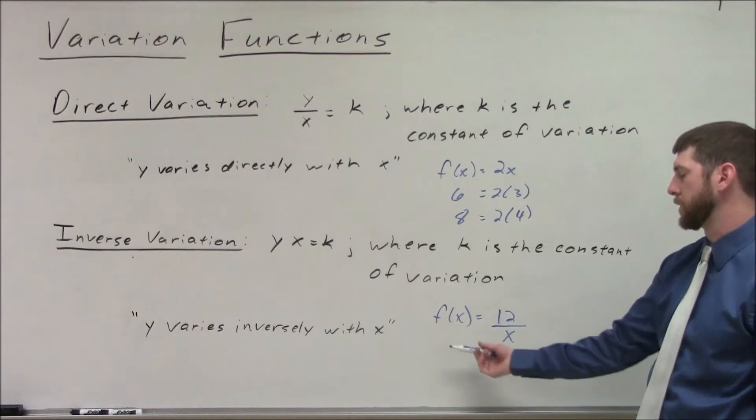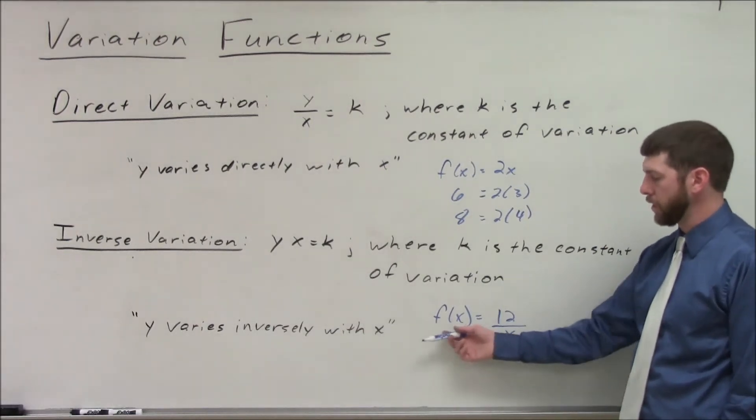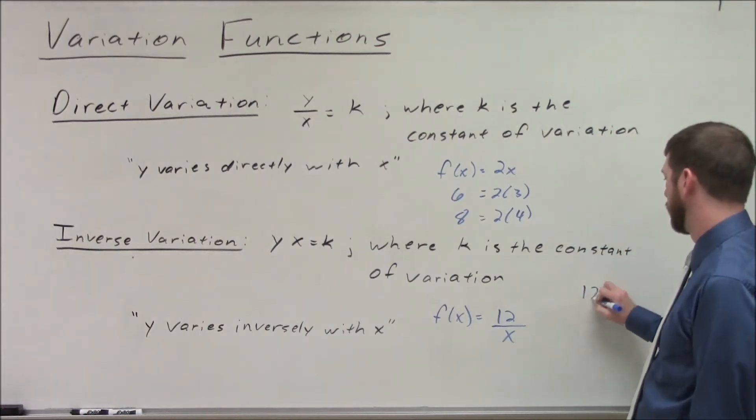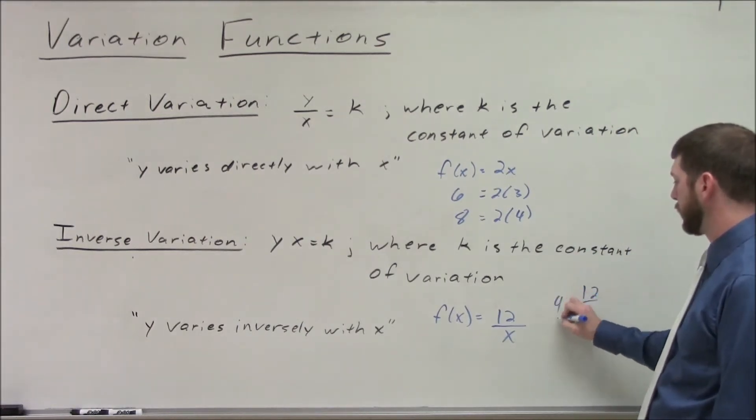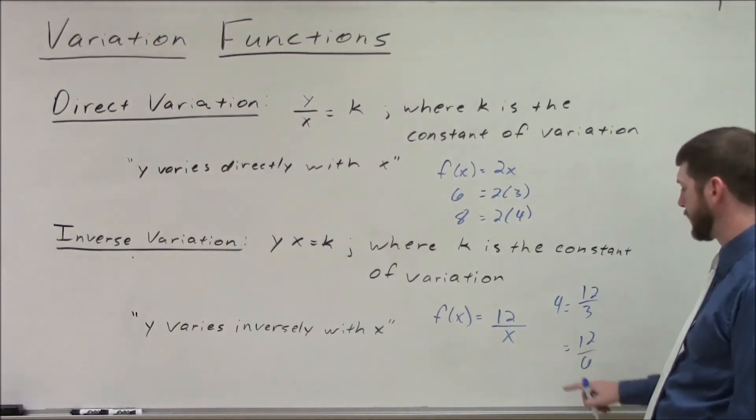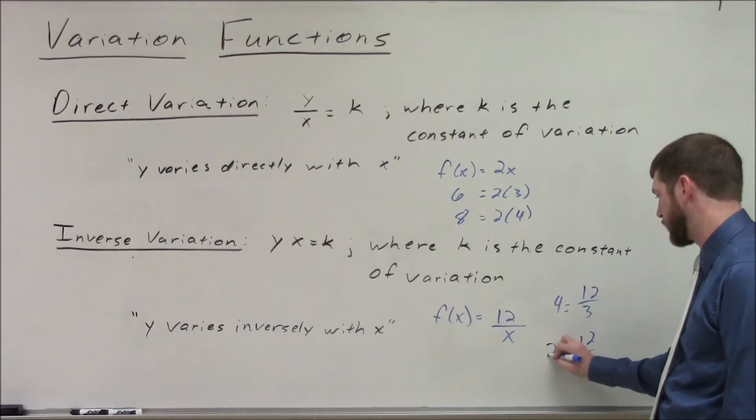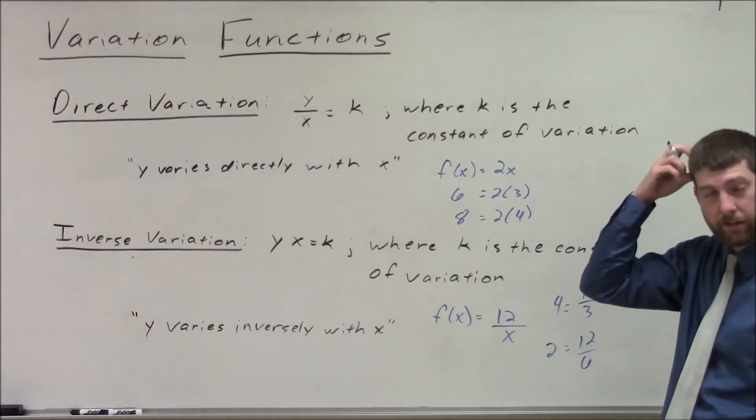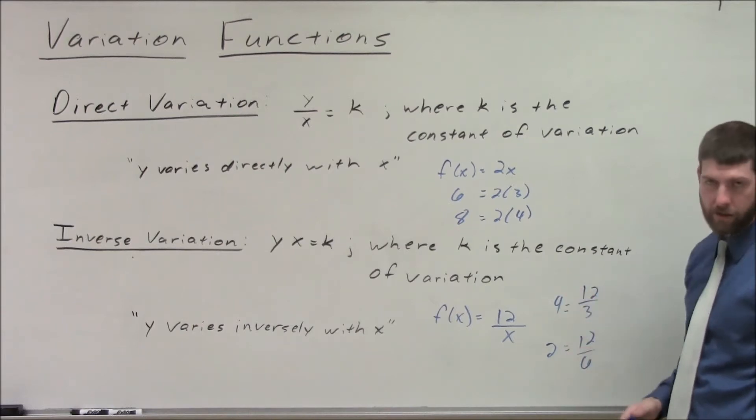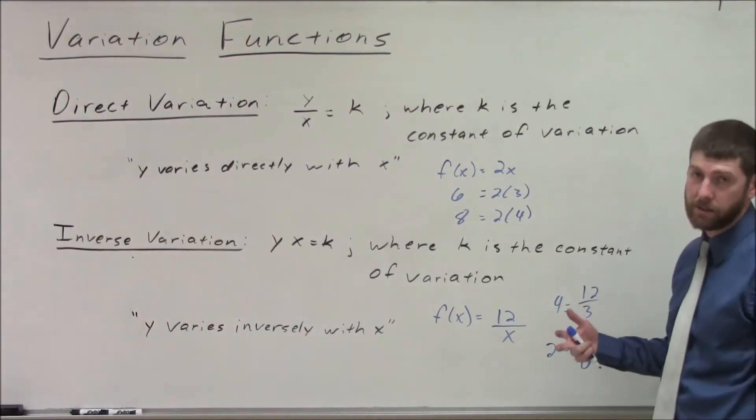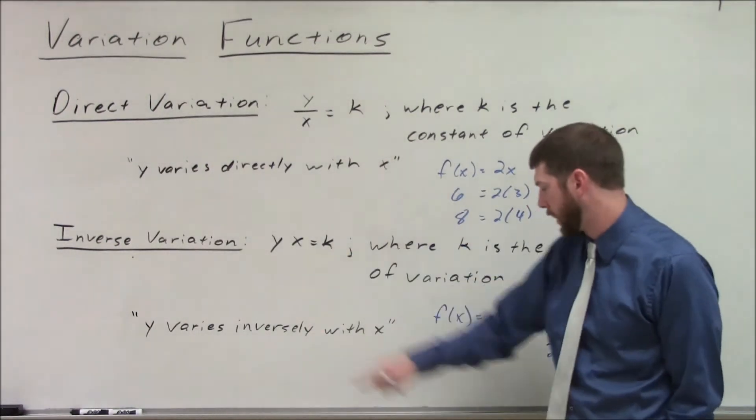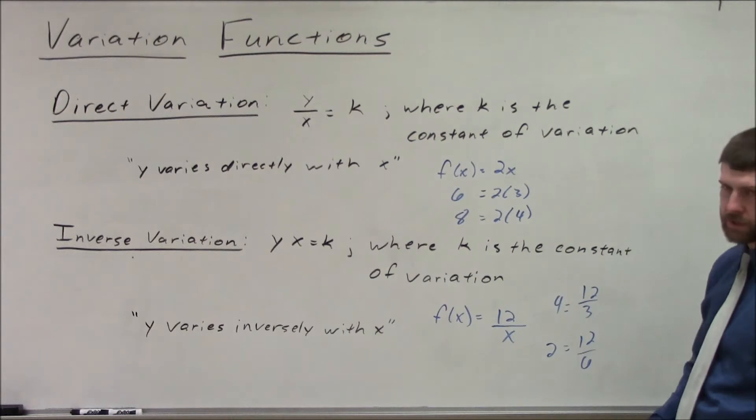So an example of that would be f of x equals 12 divided by x. So if we had, say, 12 over 3, well, we know that would equal 4. Well, if we bumped the x value up to 6, then the y value we know is going to go in the other direction. It's going to decrease down to 2. So they are inversely related. As the x values increase, now the y values are decreasing in a constant manner, all with that constant product of 12. So if I multiply the x and y, like we have here, 4 and 3 is 12, 2 and 6 is 12.